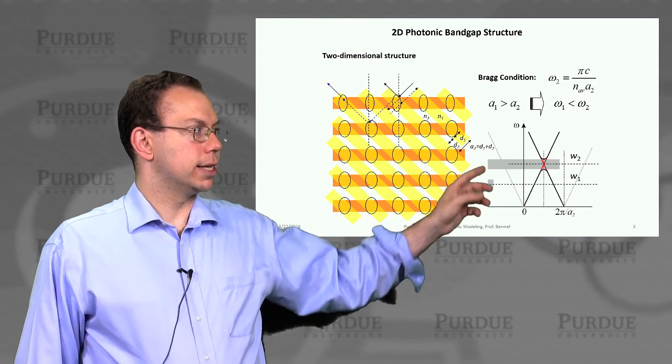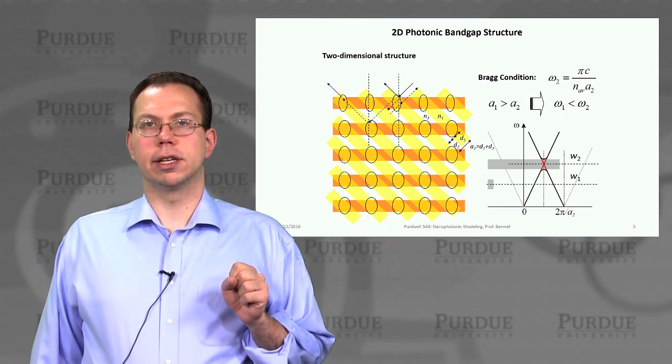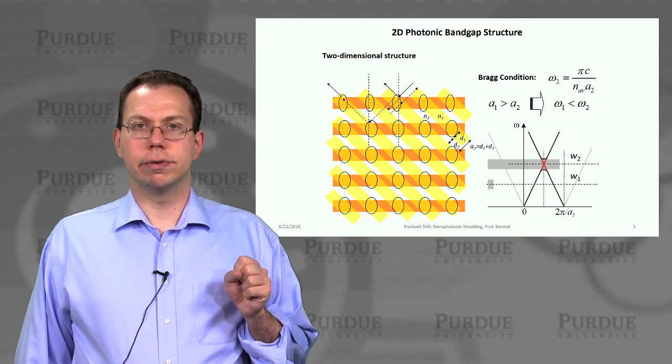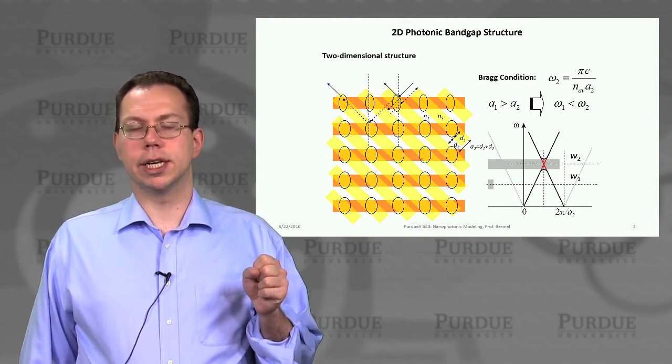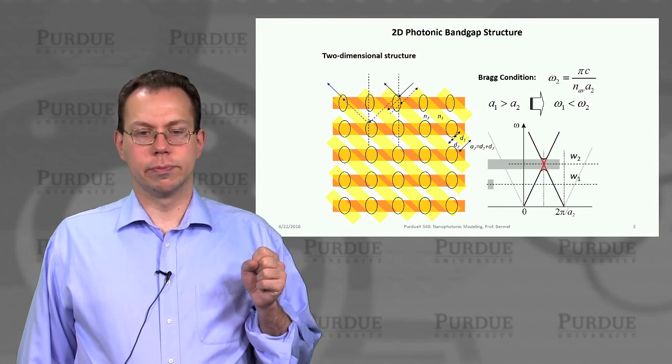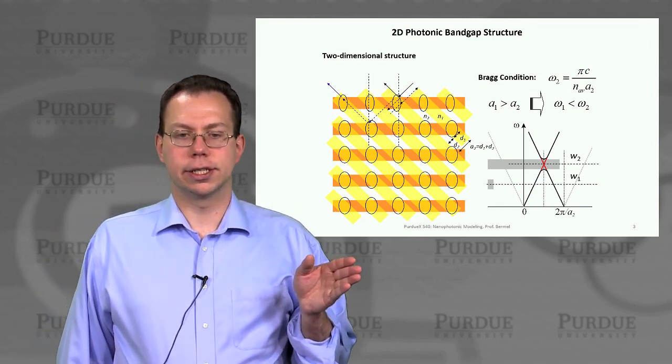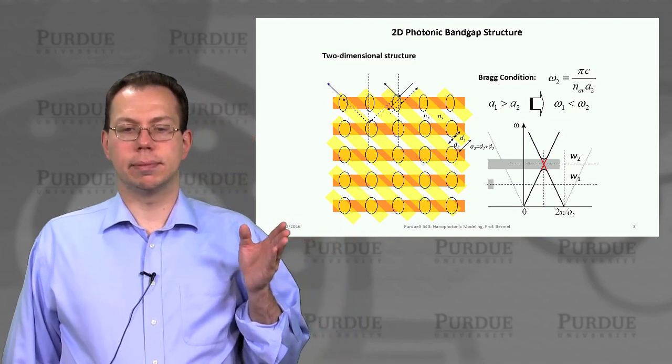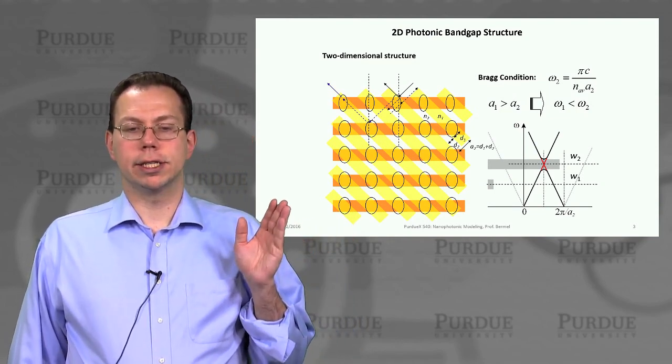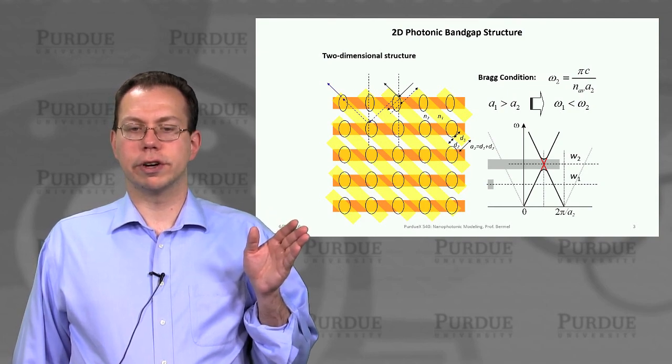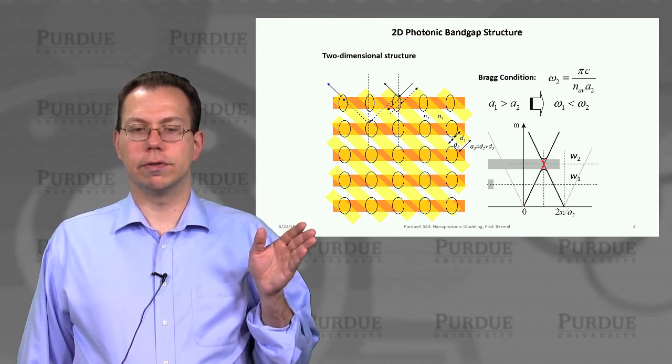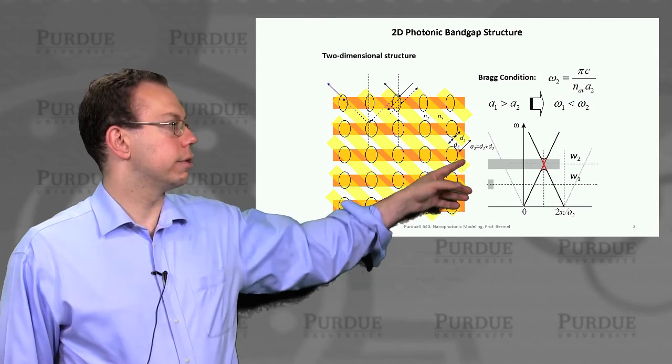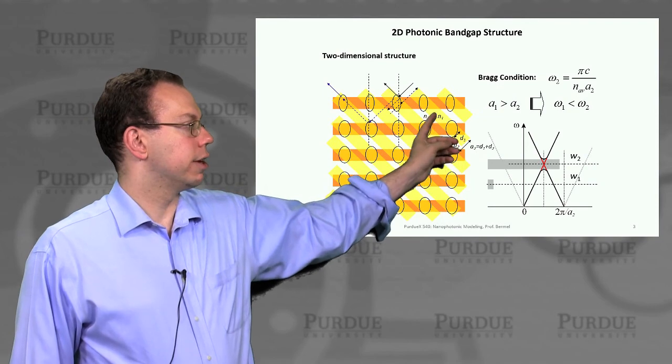And then we're going to say that each stripe has a different effective index. And because the effective indices are different in those two regions, it almost looks like a 1D distributed Bragg reflector with alternating high and low dielectric layers. So if we have a frequency that meets the Bragg condition, basically that the central frequency is equal to pi c over the period times the average refractive index, n average, which is the average of the effective media, n1 and n2.